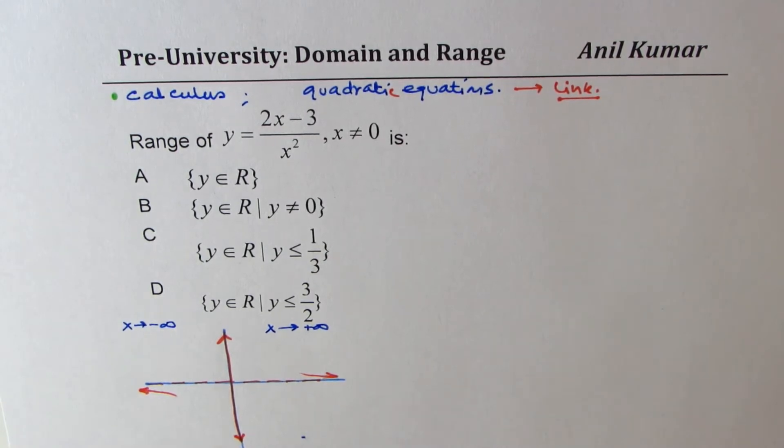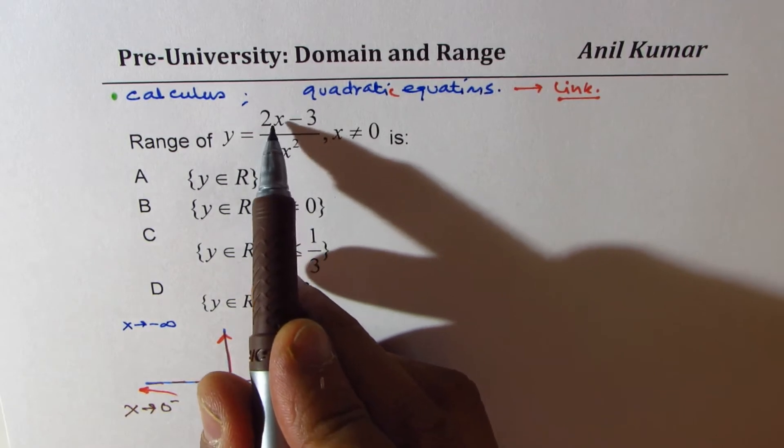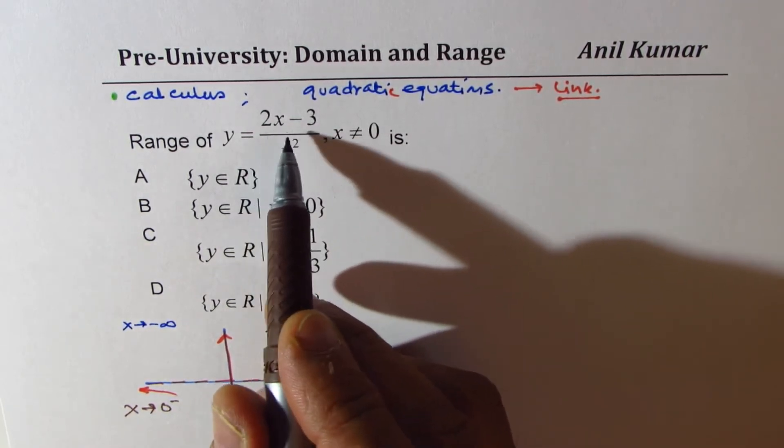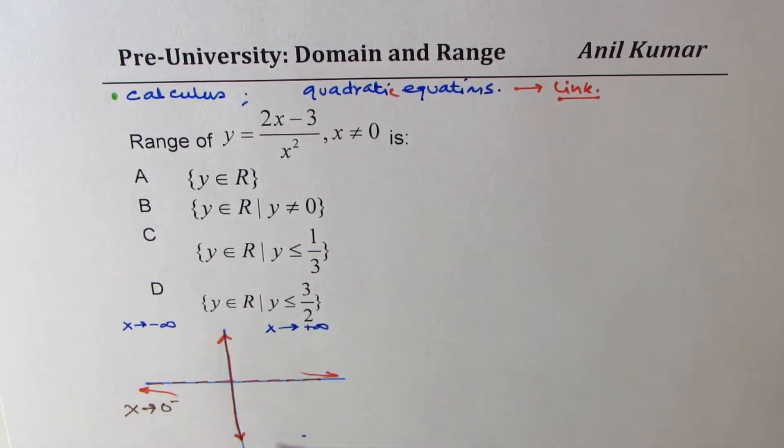Second thing which is important to understand is what happens when we are approaching 0 itself. If x approaches 0 from the left side, this is negative. That is also negative. So in that case, for a small value, we are approaching kind of negative here. So the function basically is kind of like this on this side.